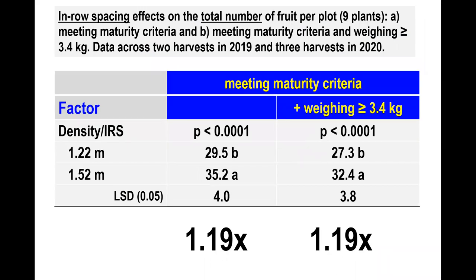The overall effect of in-row spacing on the total number of fruit meeting at least one of the four maturity criteria and weighing at least 3.4 kg was less pronounced than the effect of grafting, but still statistically significant and potentially meaningful in commercial production. Under the conditions of this experiment, increasing the in-row spacing by one foot — and thereby decreasing the potential plant population by 20% — increased fruit yield by roughly the same amount.